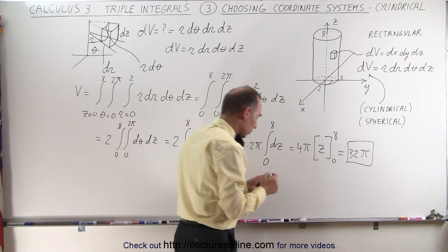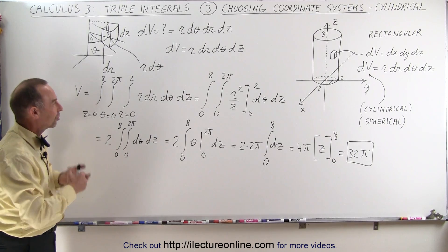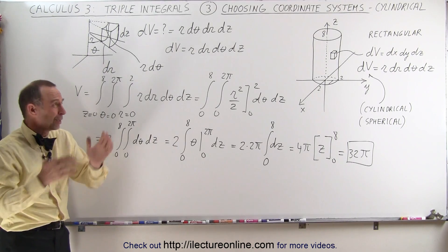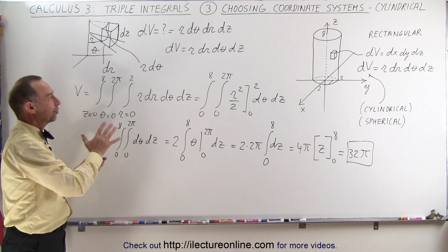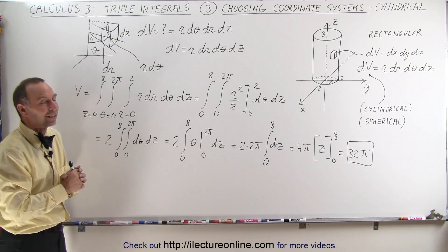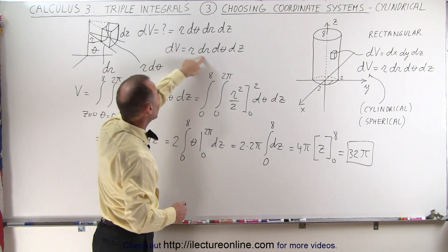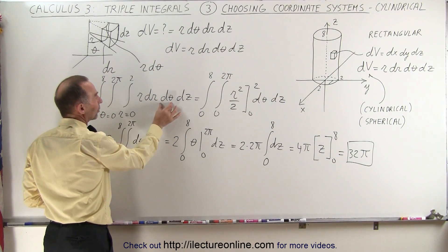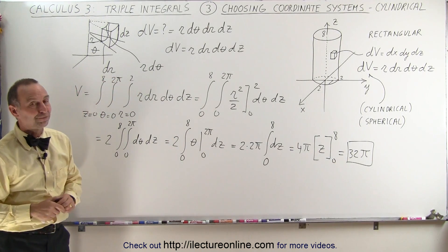And of course we saw in the previous video that 32π was indeed the volume of that cylinder. Notice how much easier it is when you use cylindrical coordinates to calculate the volume of a cylinder. You might ask why we bother when we can use the simple cylinder equation, but we want to practice triple integrals with easy examples because they do get more difficult. Remember: our volume element is r dr d theta dz, integrating over dr, then d theta, then dz, with our limits making it straightforward.